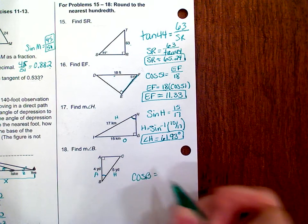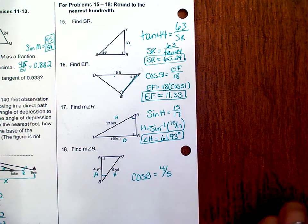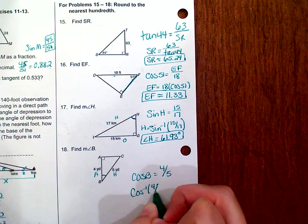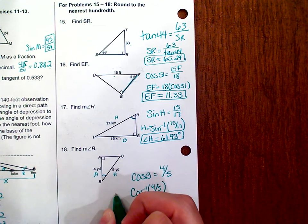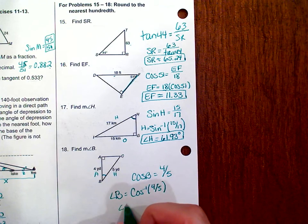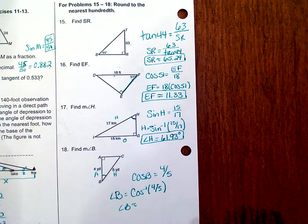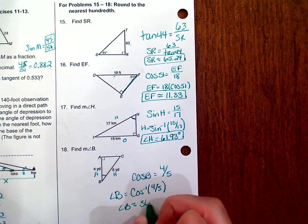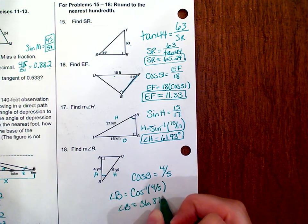So the cosine of B is equal to 4 over 5. You're going to do the inverse of that ratio, which will tell us what angle B is. Using second cosine of 4/5, we get angle B is approximately 36.87 degrees.